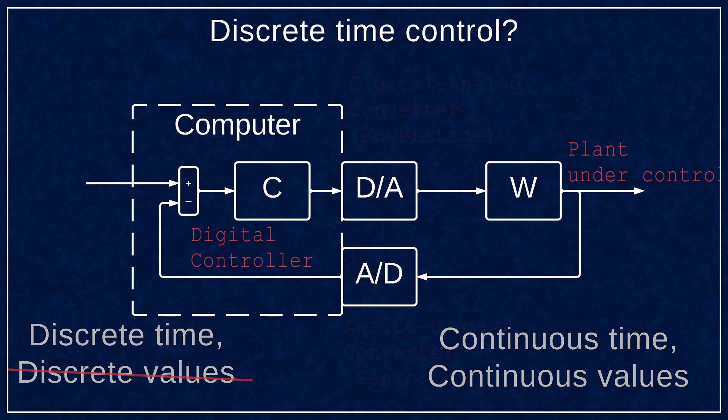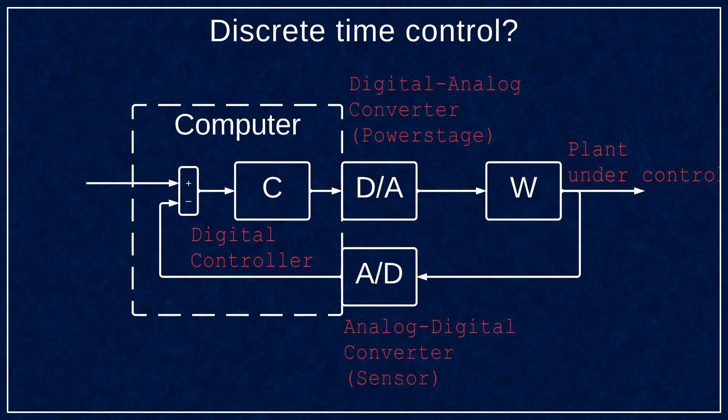On the boundary between computer and the plant you have two converters, analog to digital and digital to analog. Sometimes these are part of the microcontroller, sometimes you can think of your sensors and power stages as converters. The point is to convert from digital to physical and back.